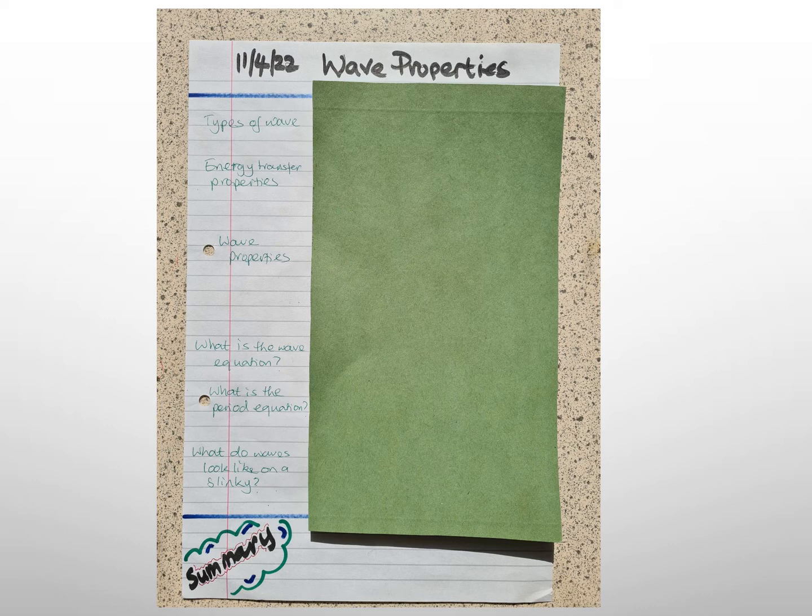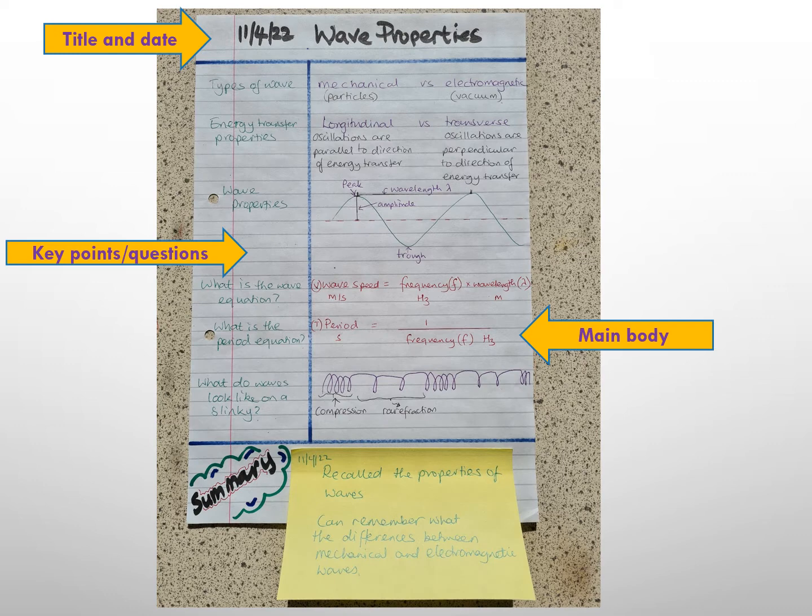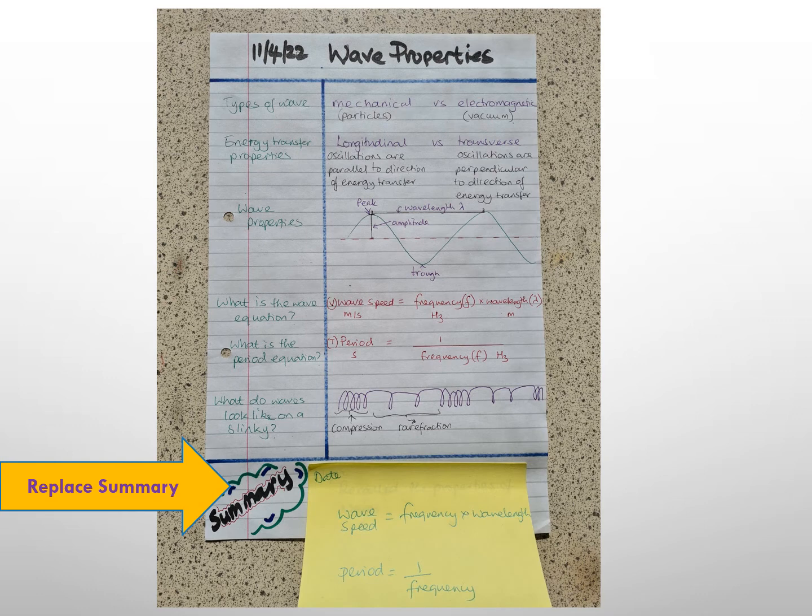The summary section at the bottom is there for you to review what you have learned or remembered. Personally, I think this section is only useful if you can add to it every time you go back to the Cornell notes in a form of retrieval practice. Therefore, I would advise you to write your summary on a sticky note that can be replaced every time you reuse the Cornell notes.